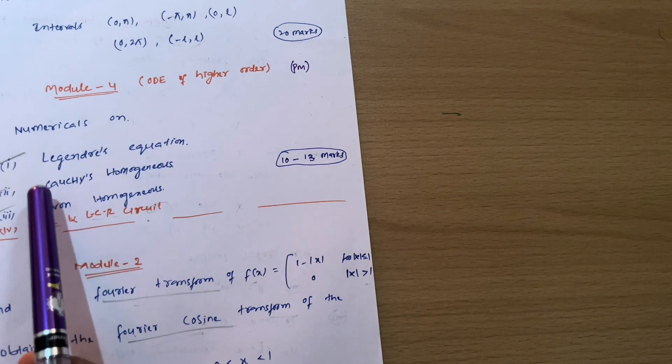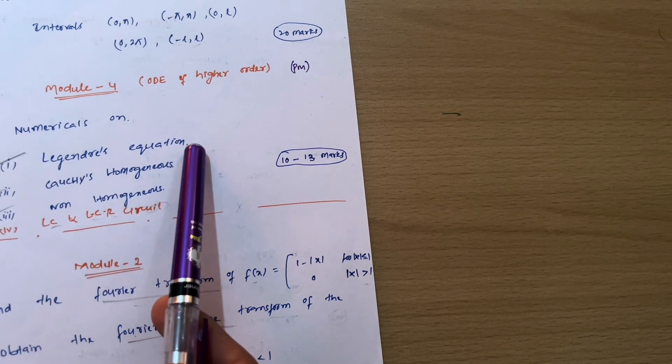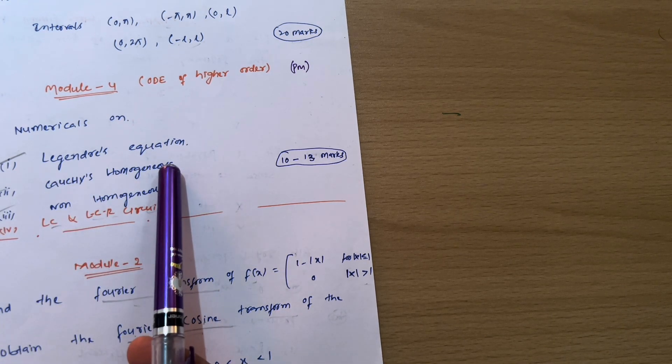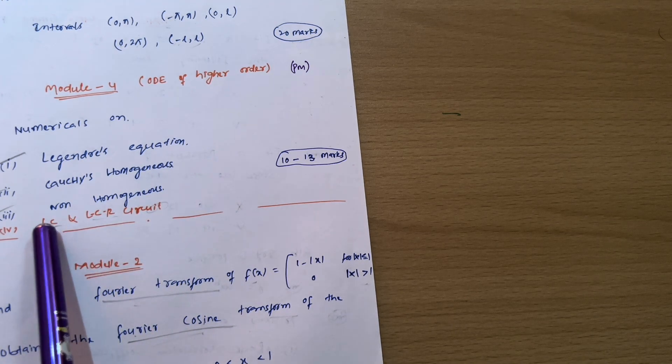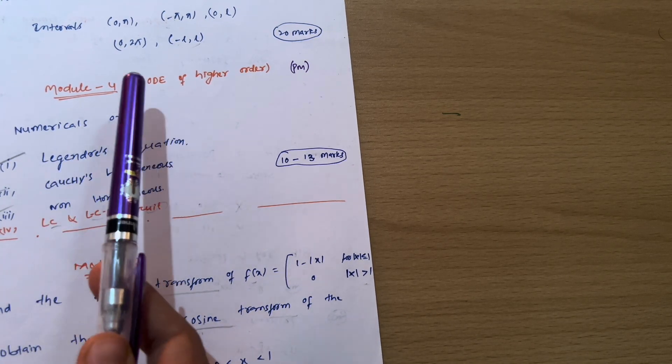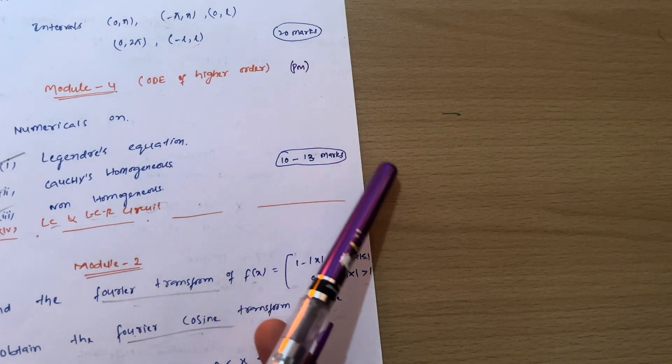That is numerical zone. First of all, you have to focus on Legendry's equation, Cauchy's homogeneous most important one, and non-homogeneous. And some questions will be on LC and LCR circuit. So these four topics you have to cover from ordinary differential equation of higher order.